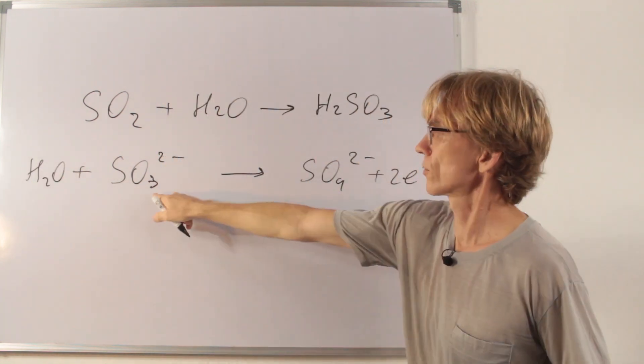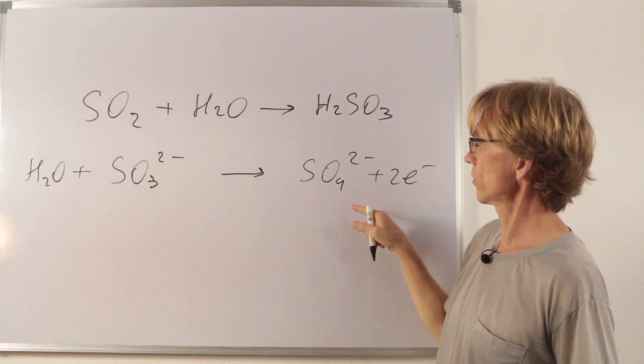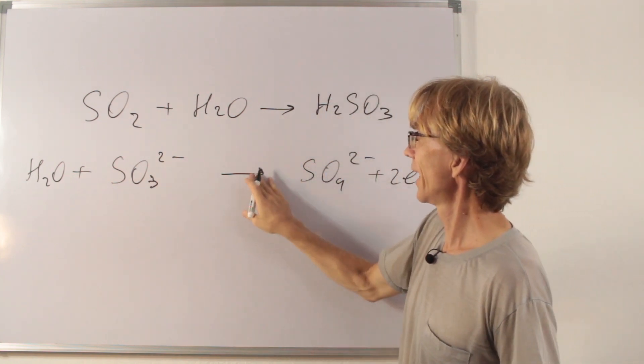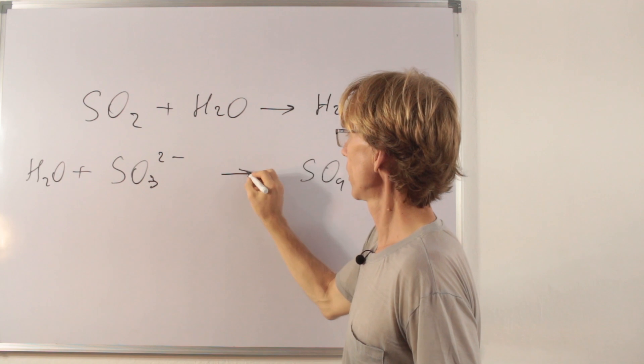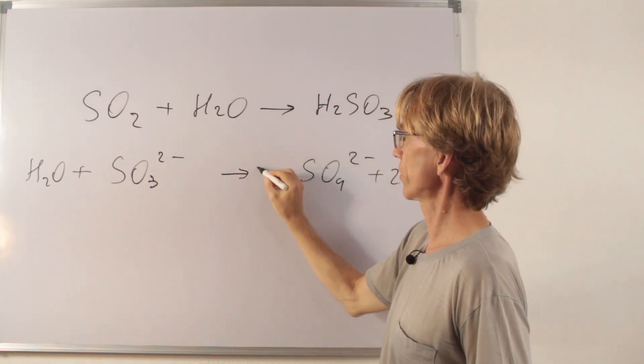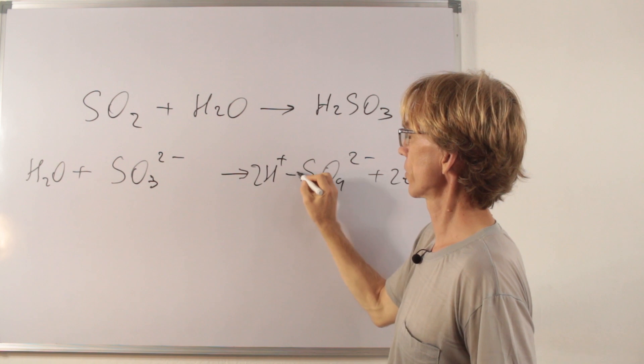Because four oxygens on three, I need four oxygens on left, four oxygens on the right. And here, I need to balance hydrogens with hydrogen ions. Two hydrogen ions.